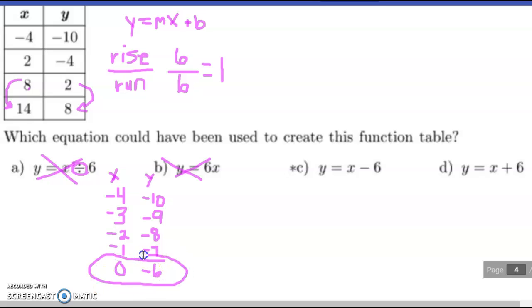negative 6. So when my x value is 0, my y value is negative 6. And that is why C is your answer. Good luck.